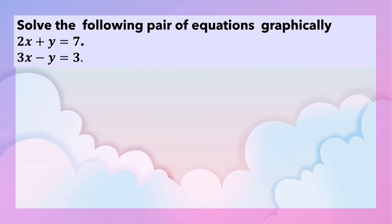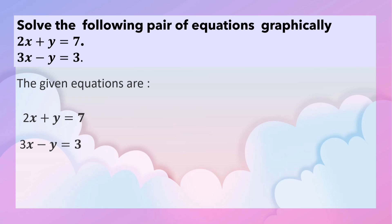Solve the following pair of equations graphically: 2x plus y is equal to 7, and 3x minus y is equal to 3. The given equations are 2x plus y equals 7 and 3x minus y equals 3. Now let us write the value of y in terms of x.